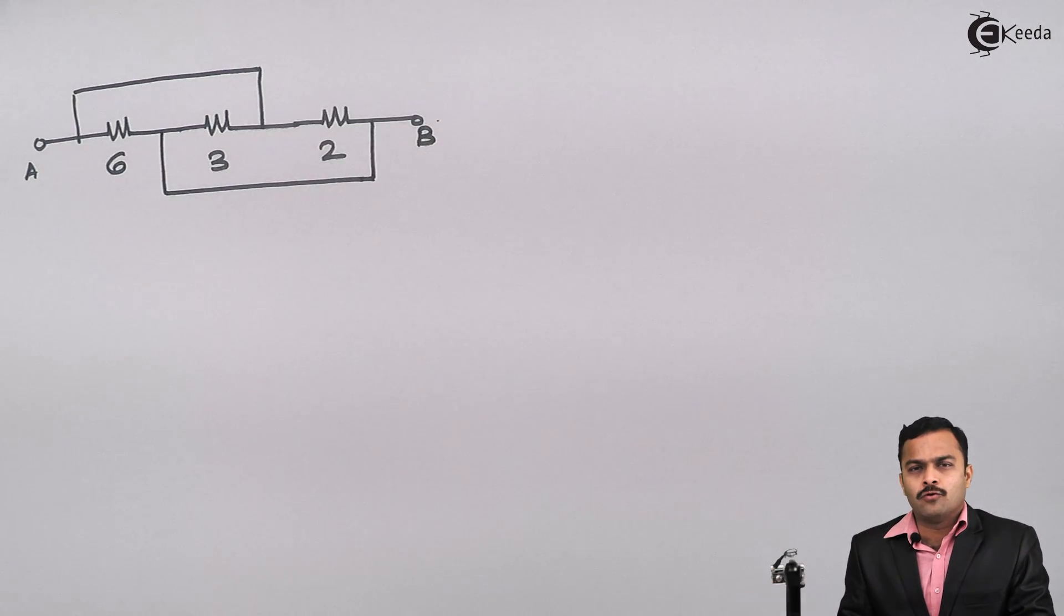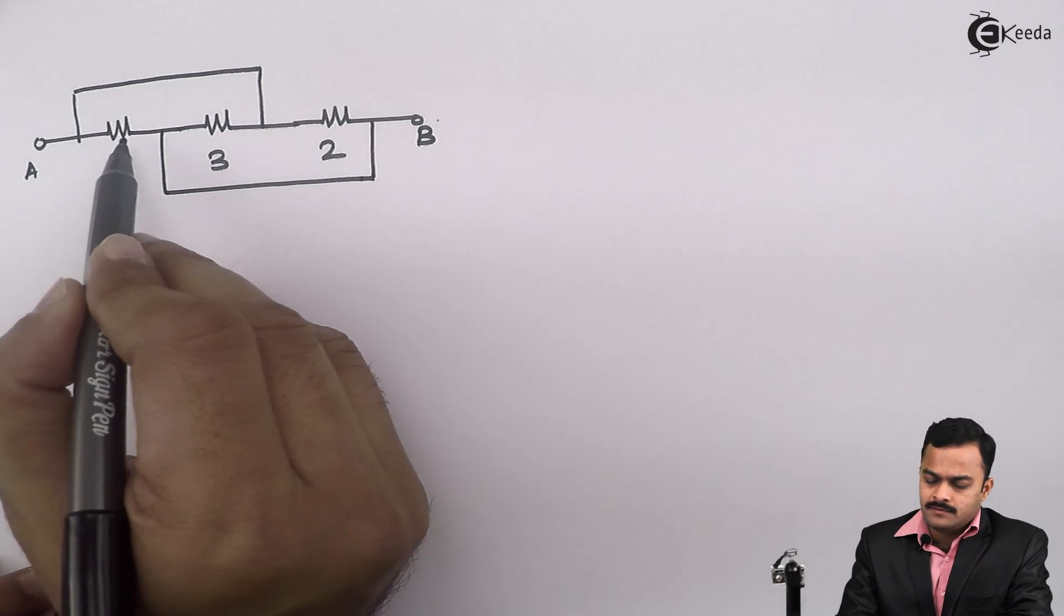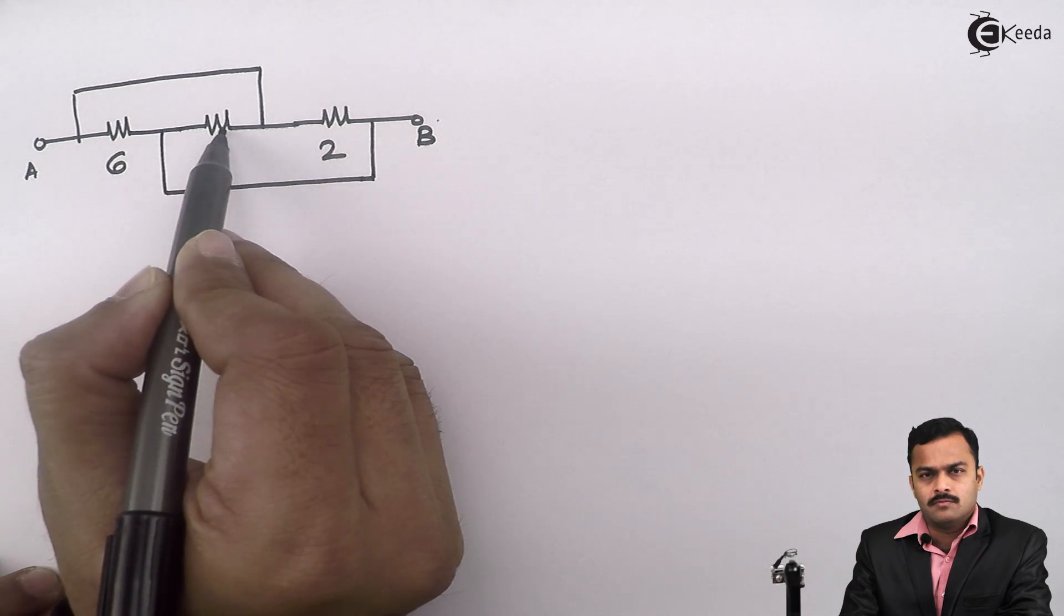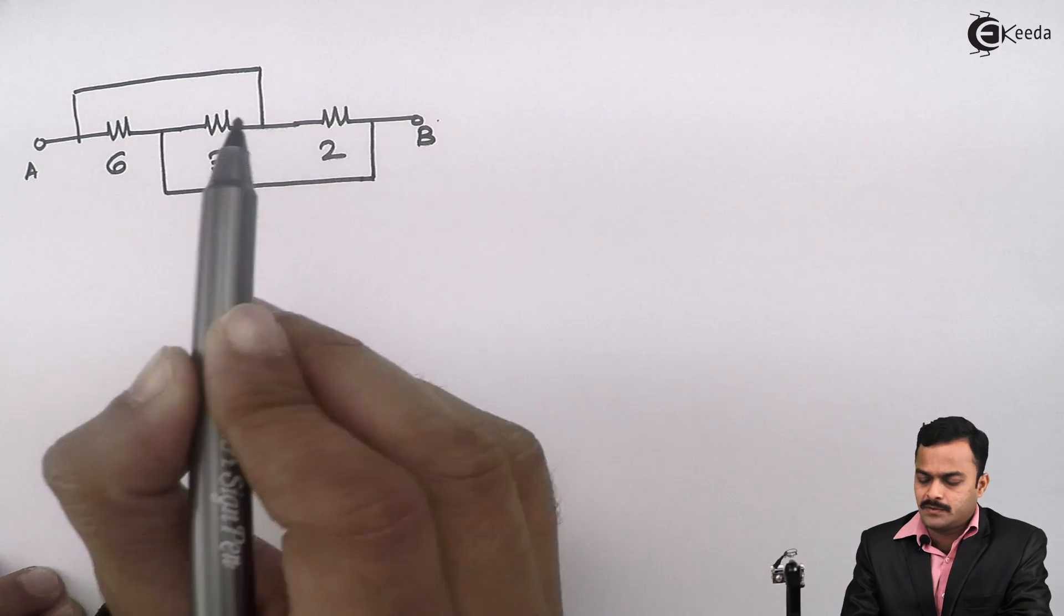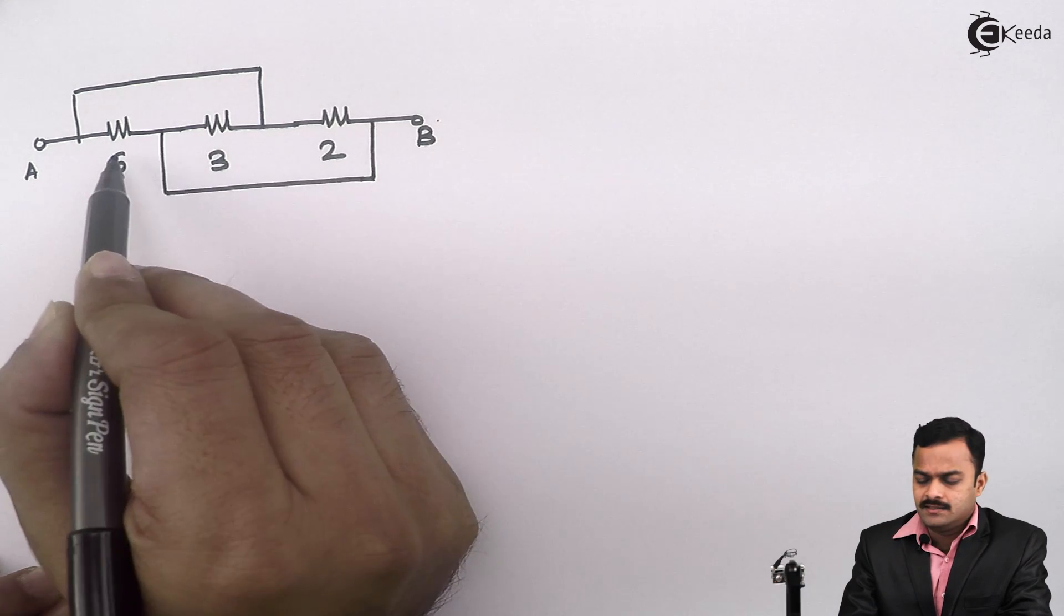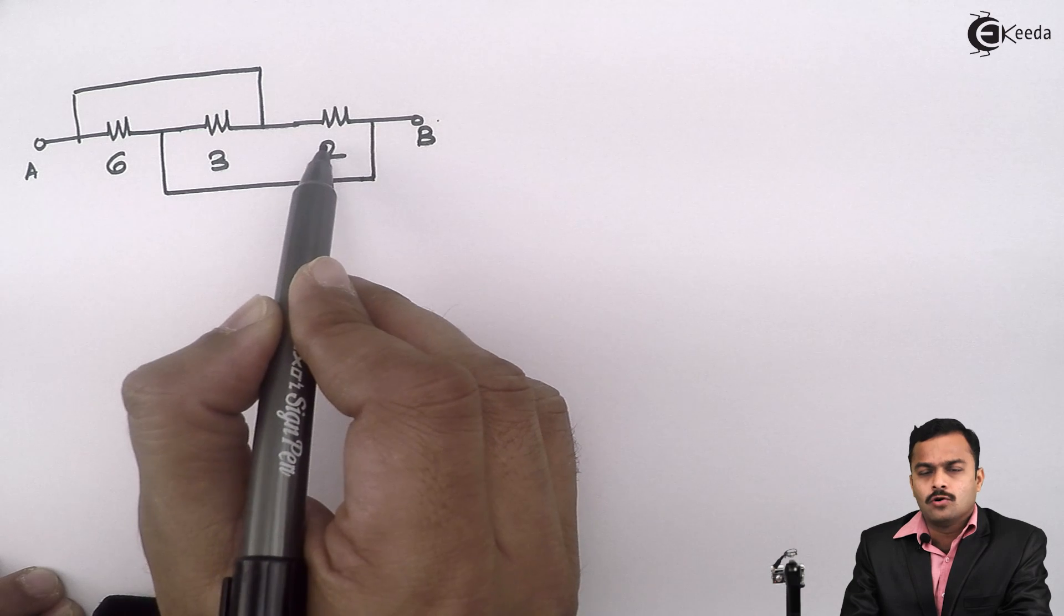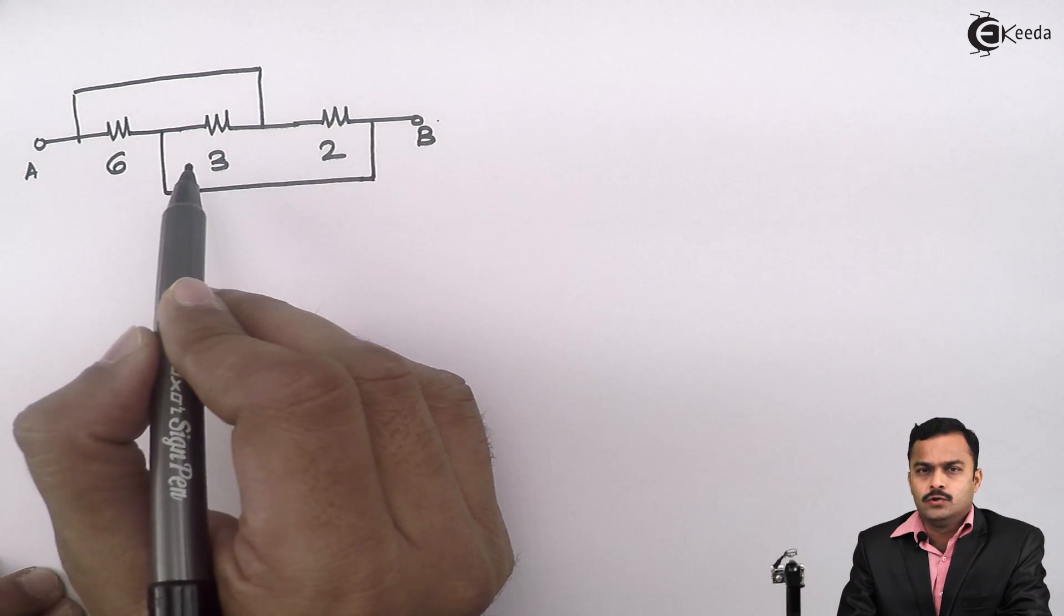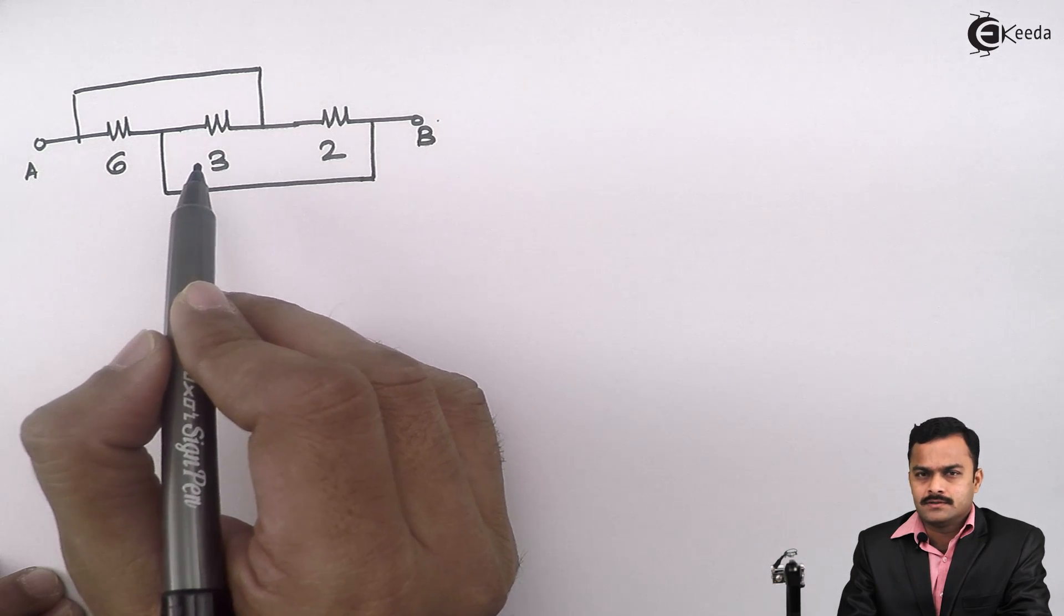Now the problem won't remain that simple, because now there is some connection between this 6 ohm and this 3 ohm. At the same time there is a connection between this 3 ohm and this 2 ohm, because of which we cannot say the 6 ohm, 3 ohm, and 2 ohm are in series. Hence we need to use some other concept also.